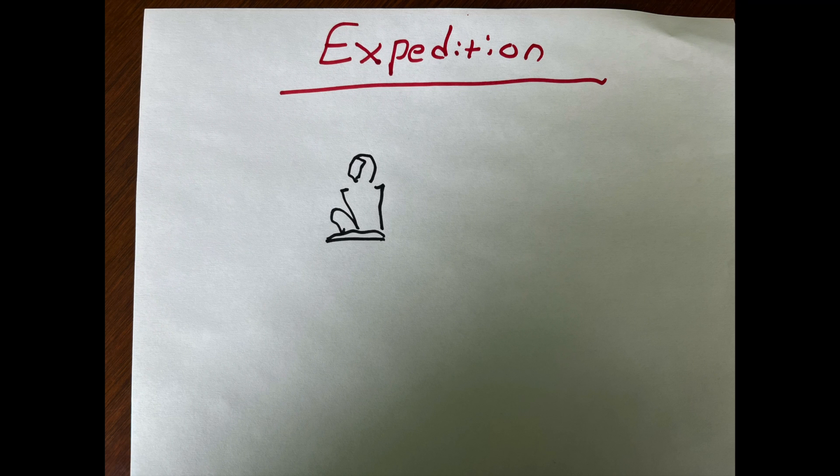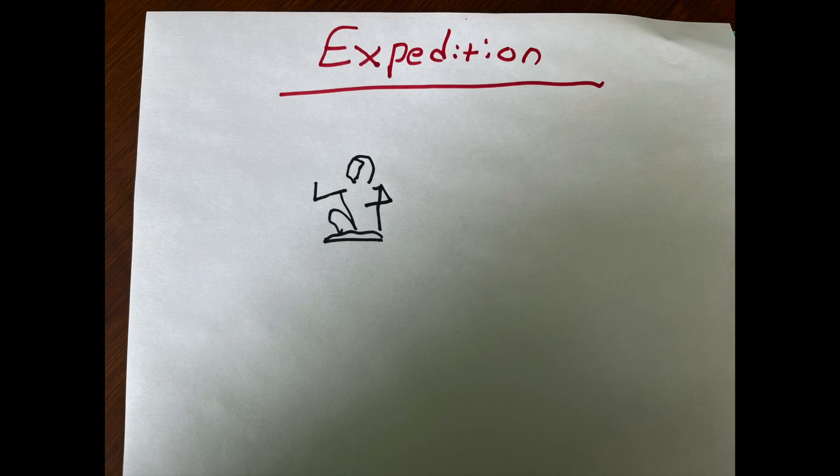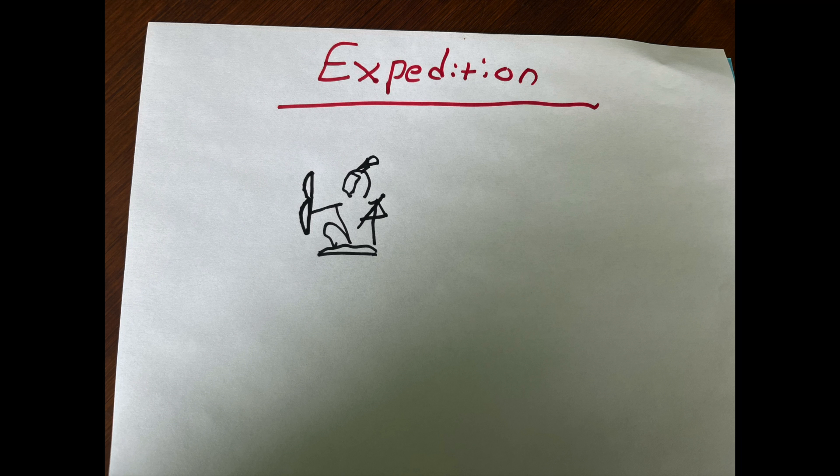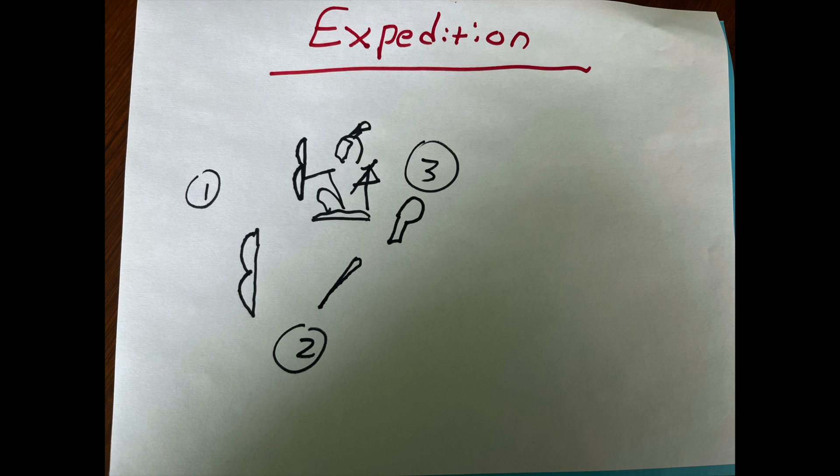Let's look at another one. Expedition. Alright, so to go on an expedition, you're going to draw a man, the sitting man, and then his hands in the forward position, as opposed to pointing to the mouth. Now you're going to decorate the man and make him into a warrior. You're going to give him a shield, a sword, and a feather on his head. That becomes the ideogram for the word expedition, because you're going to send a soldier out on an expedition.